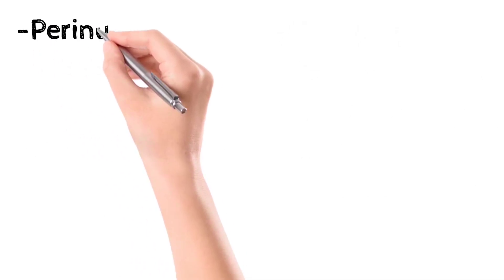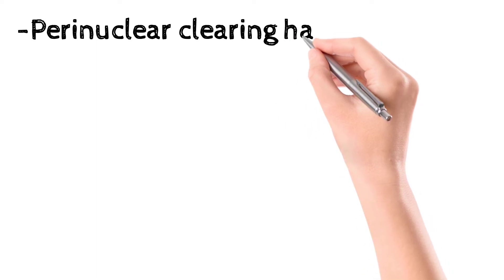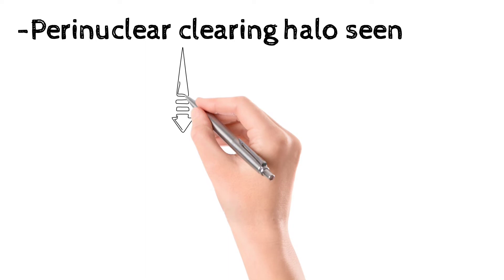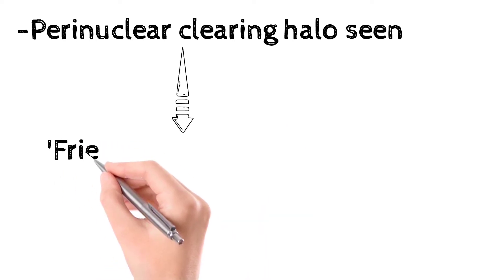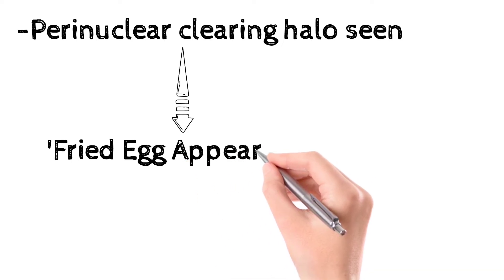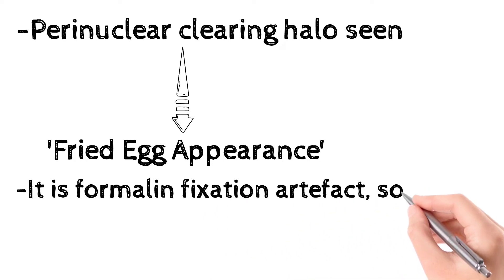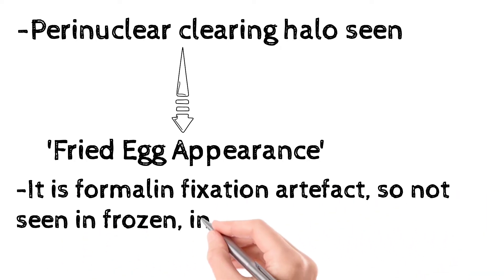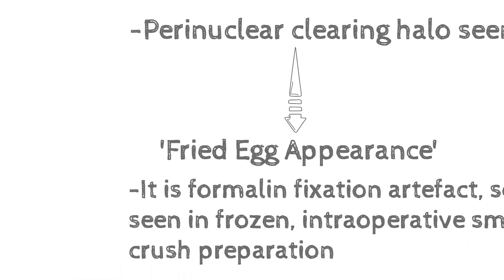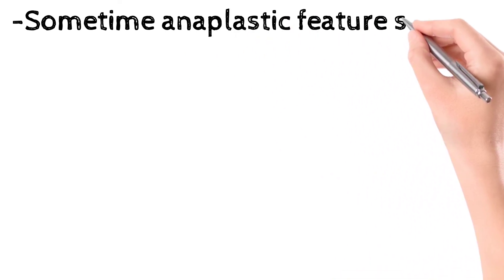The main characteristic finding of oligodendroglioma is the presence of perinuclear clearing, known as the perinuclear halo, which gives a fried egg appearance because it looks like a fried egg. This perinuclear clearing is a formalin fixation artifact, so it will not be observed in frozen section, intraoperative smear, or crush preparations.